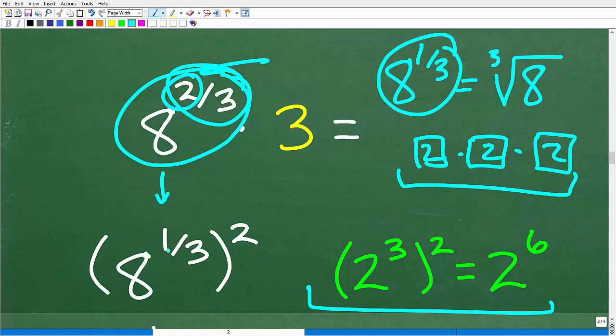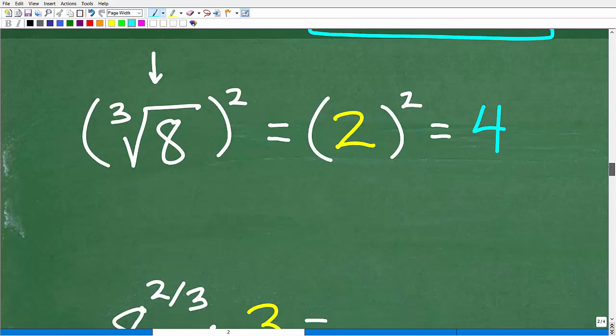We can write it this way: 8 to the 1/3 with the 2 outside here. And this is equivalent to 8 to the 2/3 because we can always distribute that 2 back in using this property. So if you understand that, this should be pretty easy to solve.